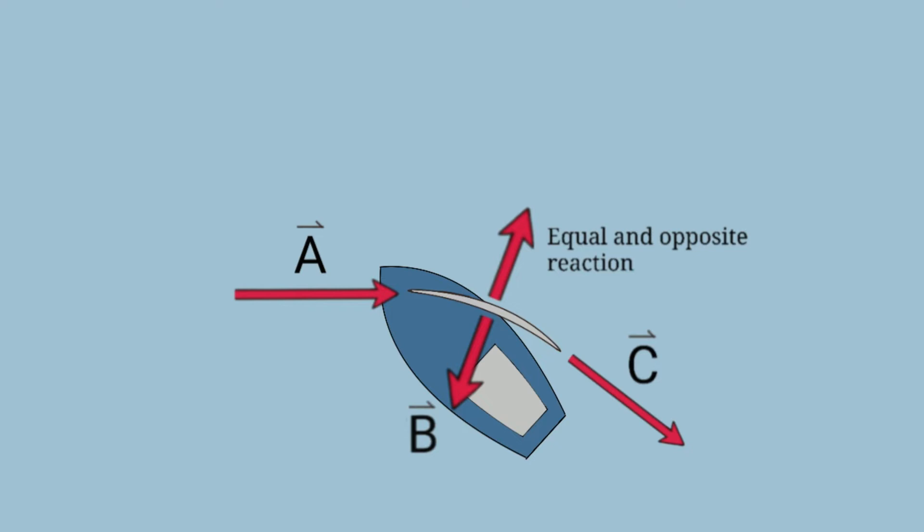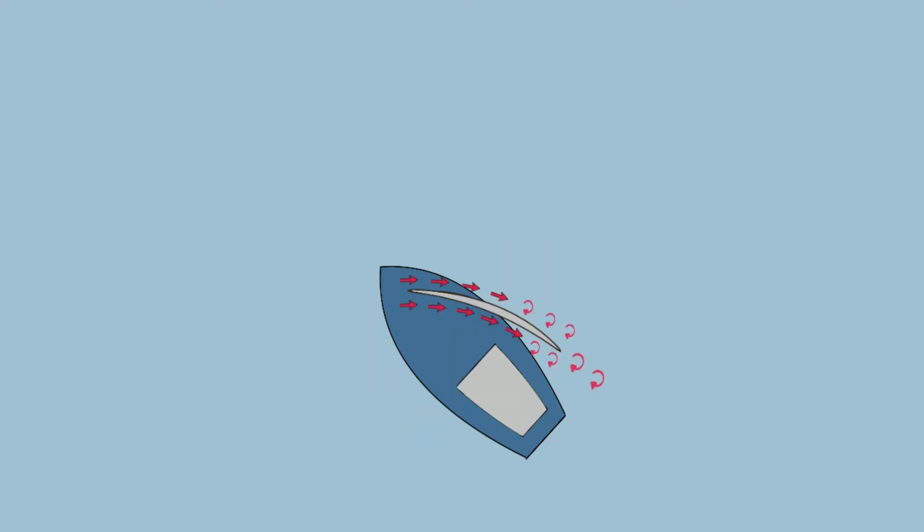Now, the actual airflow over the sail may look more like this. There's turbulence and vortex shedding towards the end of the sail. You definitely don't want to be sailing in the dirty wind left by another sailboat. But these vectors show the overall net effect.